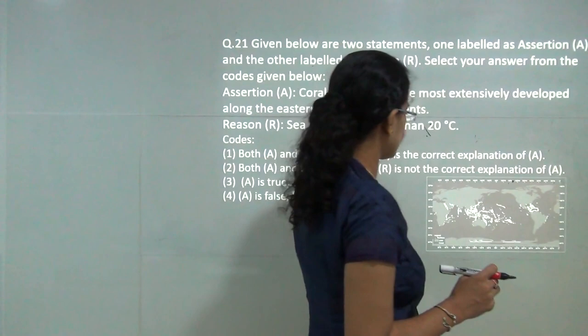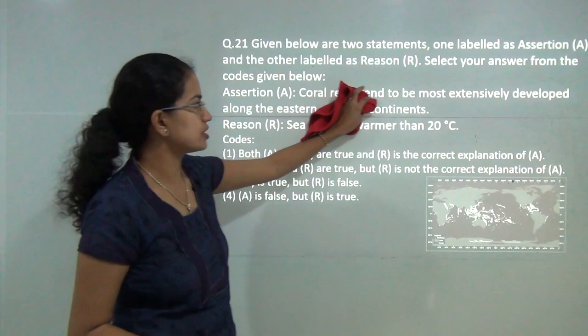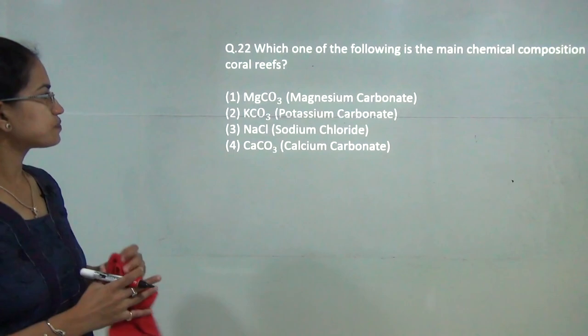Next question: coral reefs tend to be extensively developed along the eastern edges of the continents. That is true, as you can see in the diagram below, most of the eastern edges of the continents have the coral reefs and the sea water is warmer than 20 degrees is the basic condition for this to be true. Both the statements are true.